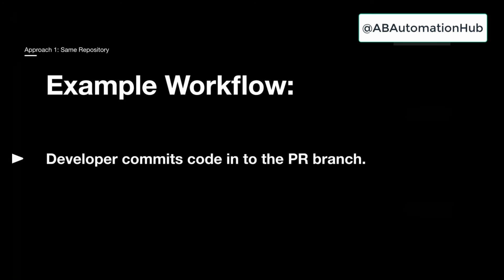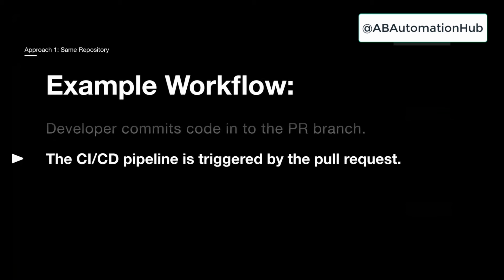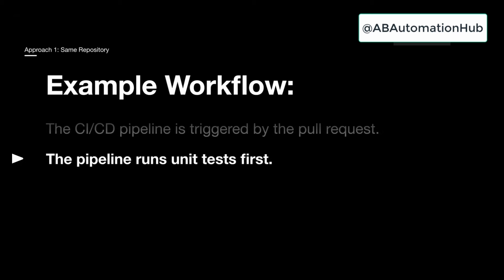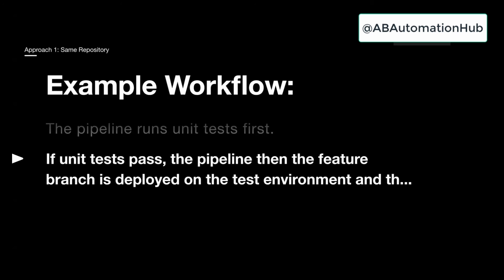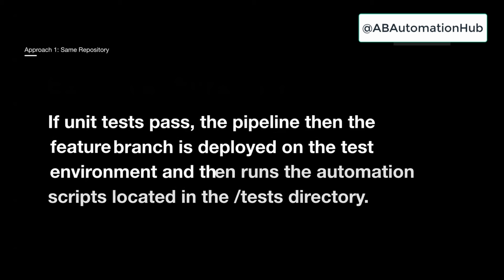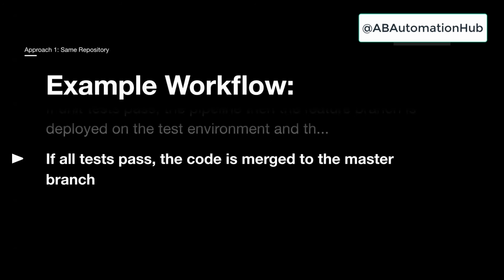In the example workflow: the developer commits code into the PR or feature branch, the CI/CD pipeline is triggered by that pull request. The pipeline runs unit test cases first — following the testing pyramid. If unit tests pass, the feature branch is deployed to the testing environment, for example staging. Then test automation scripts are executed on that environment from the test directory. If all test cases pass, the code is merged into master; if failed, the build fails. This is our second sub-approach.